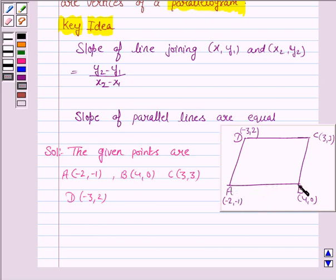That is, we have to prove that slope of AB is equal to slope of CD and slope of BC is equal to slope of AD.